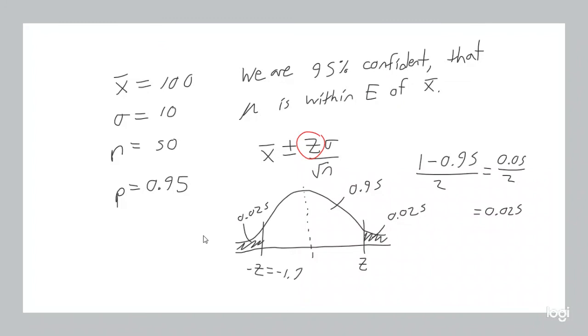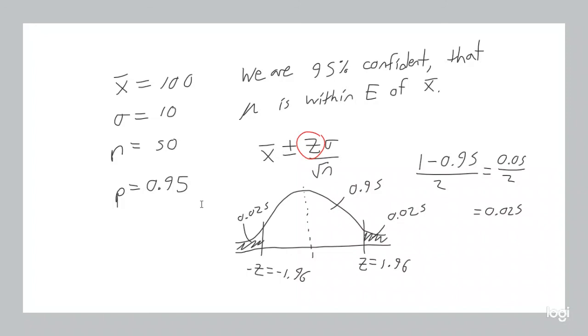Negative 1.96. And because of symmetry the positive cutoff will be 1.96. And now we have everything we need to calculate our confidence interval.